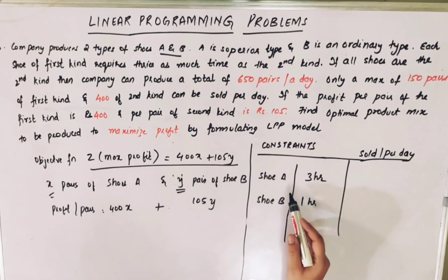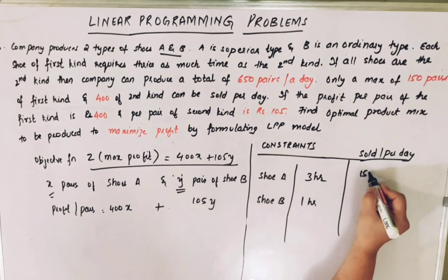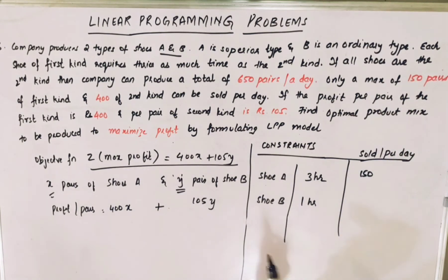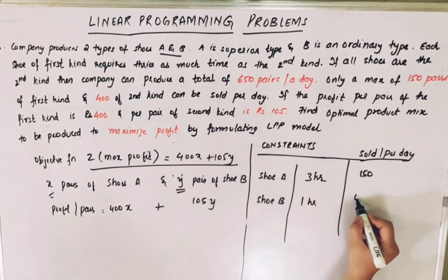For shoe A, the maximum number of shoes that can be sold per day is 150 pairs. And second type is 400. This is max.